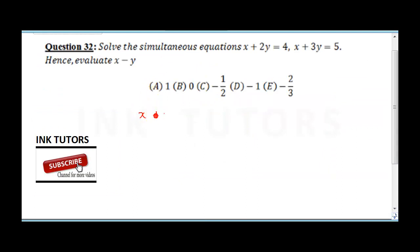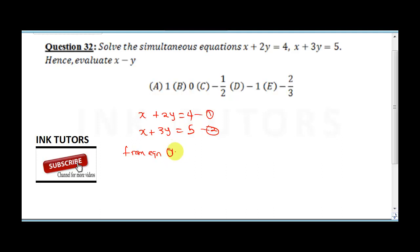Question 32 says solve the simultaneous equations x plus 2y equals 4 and x plus 3y equals 5, then evaluate x minus y. I'll call these equation 1 and equation 2. From equation 1: x equals 4 minus 2y — call this equation 3.